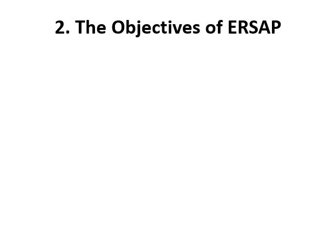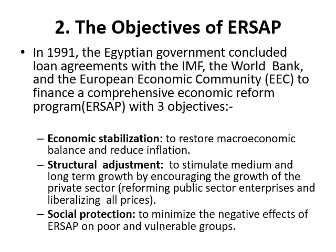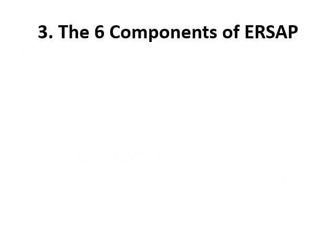The second point covers ERSAP. In 1991, the Egyptian government concluded loan agreements with the IMF and the World Bank to finance a comprehensive economic reform program called ERSAP. That program had three objectives: first, economic stabilization to restore economic balance and reduce inflation; second, structural adjustment; and third, social protection.